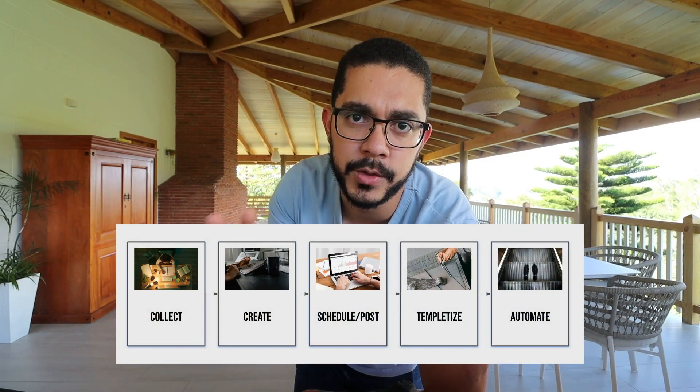After I'm done with all of the brainstorming and moving things around, I usually end up with something like this. This is what I call the Creator System, and it's one of the courses I currently sell. First step is collect, second step is create, third step is schedule or post, fourth step is templatize, and the last step is automate. It didn't start like this — it was a 10-step process — but after rereading the slides four or five times, I ended up with a five-step system, and with that I created a course.